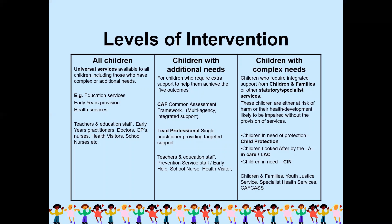Children with complex needs are those who require integrated support from children and families or other specialist services. These children are either at risk of harm or their health and development is likely to be impaired without the provision of services. This includes child protection, children looked after, children in need, and children and families in the youth justice service. Specialist health services will be required in this category. The levels are already categorized.